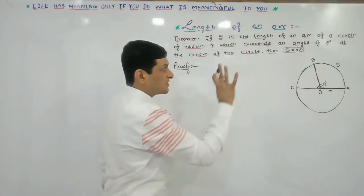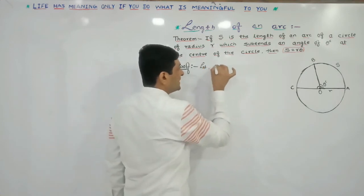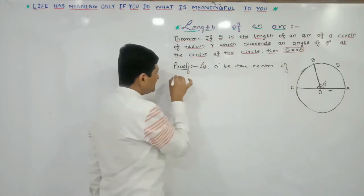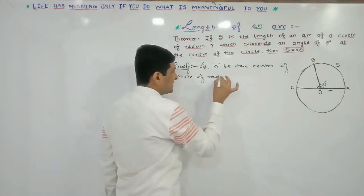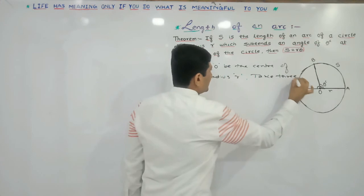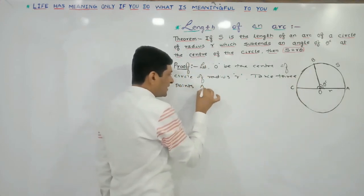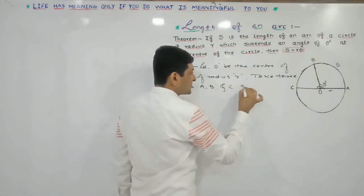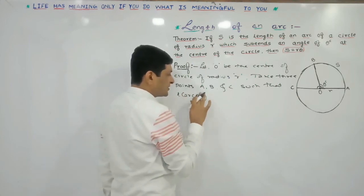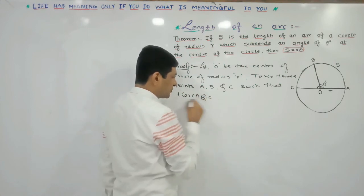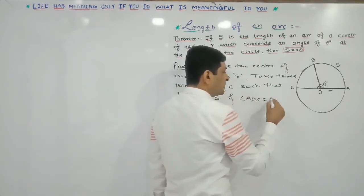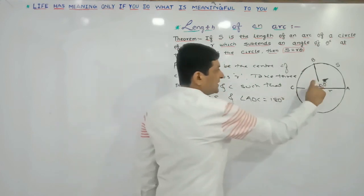Let O be the center of the circle of radius R. Take three points A, B, and C such that the length of arc AB is equal to S and angle AOC is equal to 180 degrees.